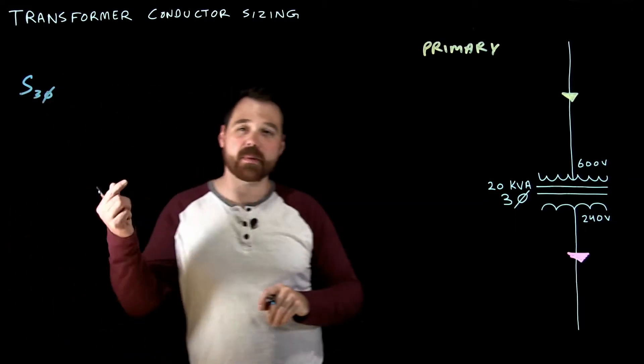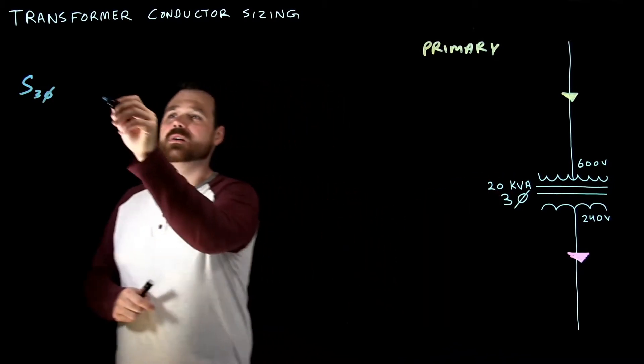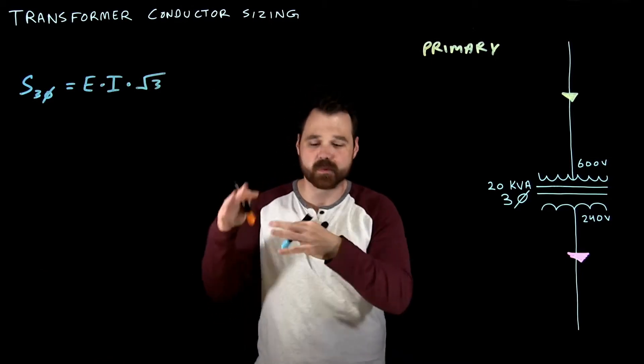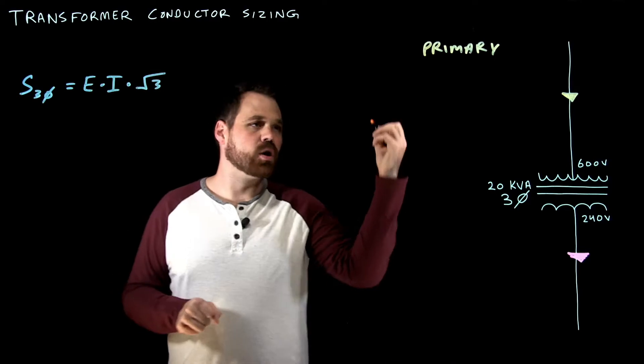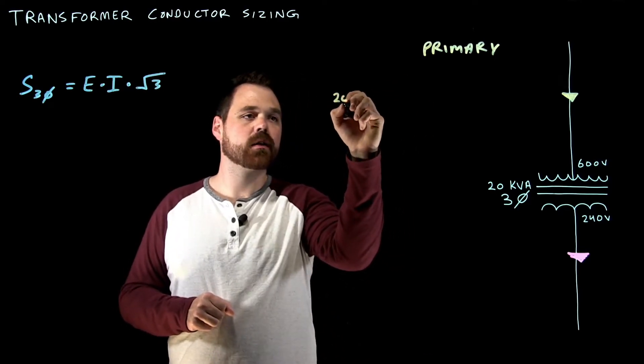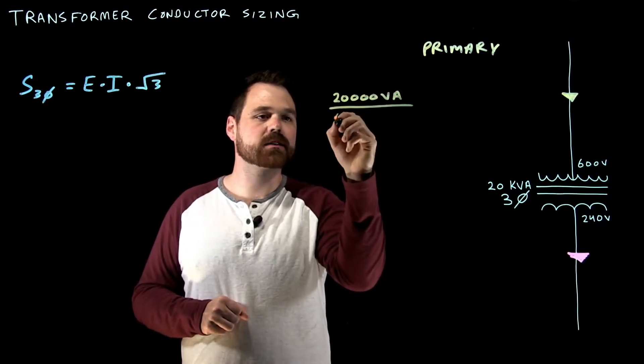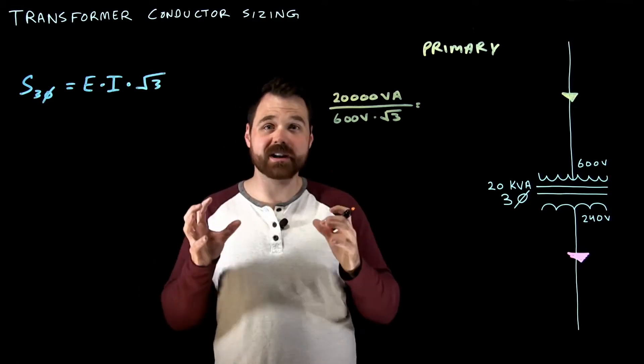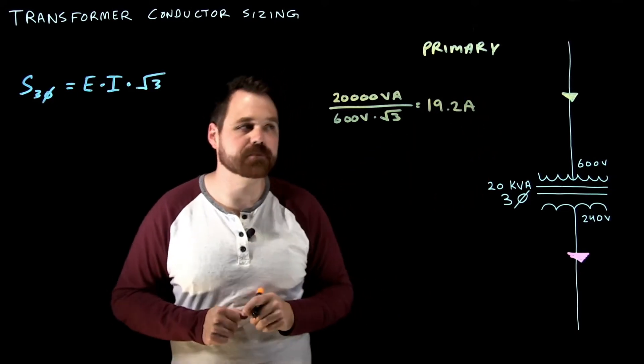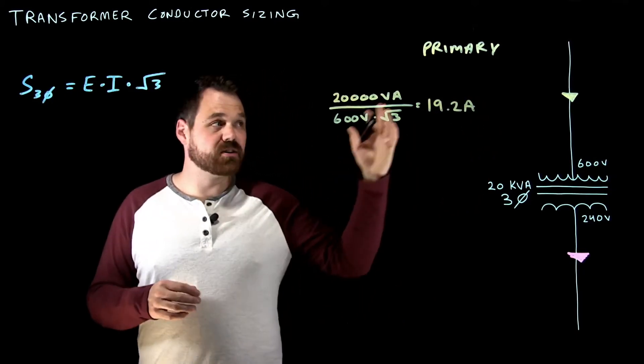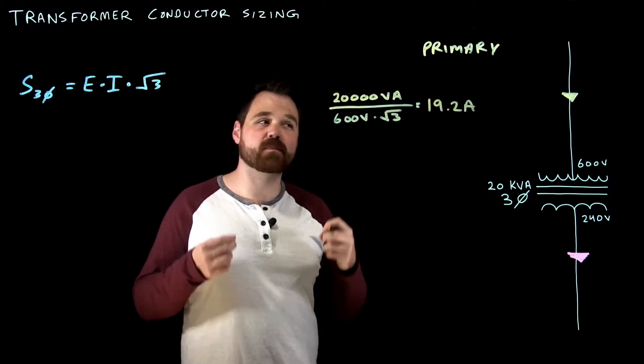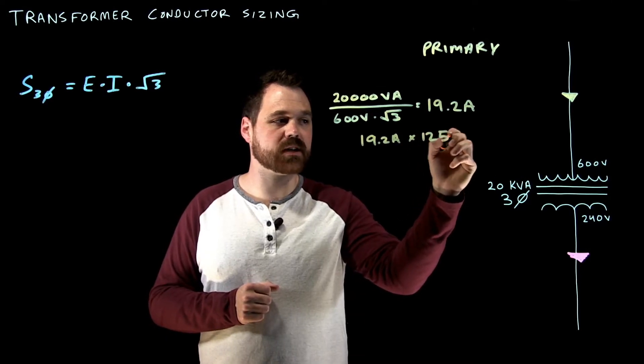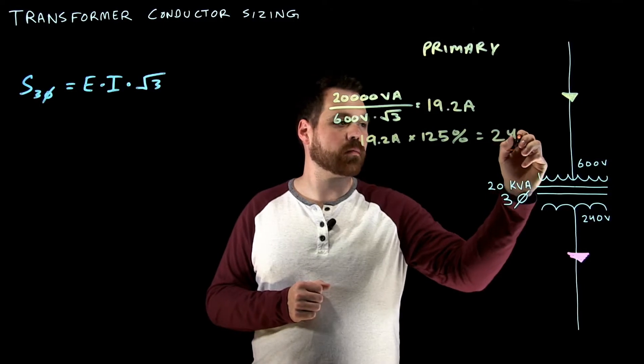We're going to use our S three phase formula, our apparent power for three phase, because we're talking a three phase transformer. We know that's E times I times root three. So we're going to use that formula transpose it. And that's how we're going to calculate our rated current in this case. So that would mean that we would take 20,000 VA divided by 600 volts times root three, that gives us a rated current, the rated primary current of 19.2 amps. Now, we need that conductor to actually be able to carry 125% the rated current. So we're going to take our 19.2 times 125% and that is going to equal 24.1 amps.